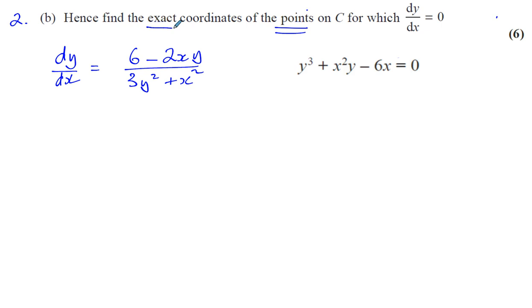There's a few things to realize here. First, we need to find the exact coordinates, so it should be in exact not rounded form. If it comes out as a third or something in terms of pi, you have to leave it in that form.